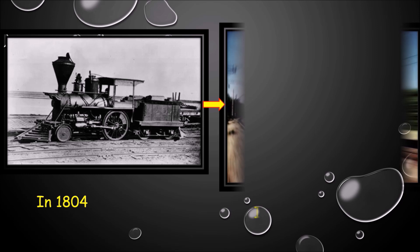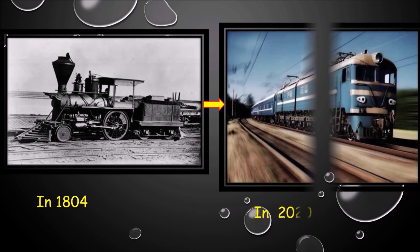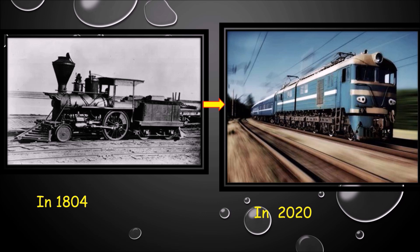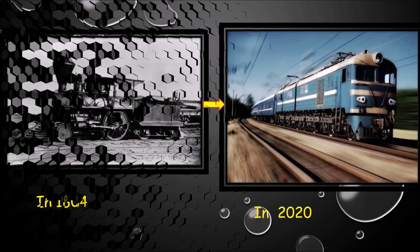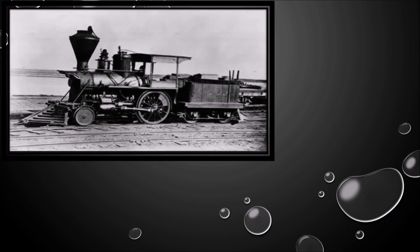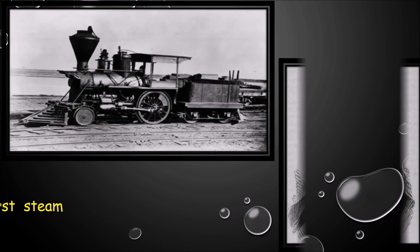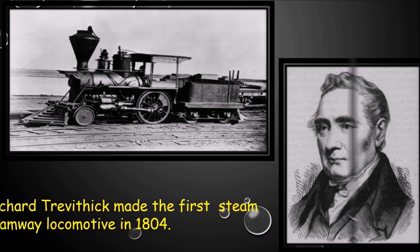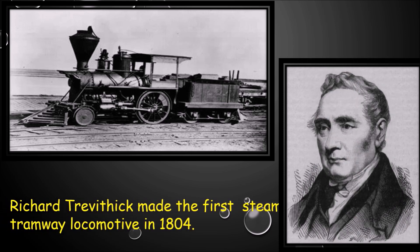Our next invention is rail mode of transport. In 1804 the first railway engine was developed, and in 2020 we are using this type of trains. Rail mode of transport was invented by Richard Trevithick, who made the first steam tramway locomotive in 1804.